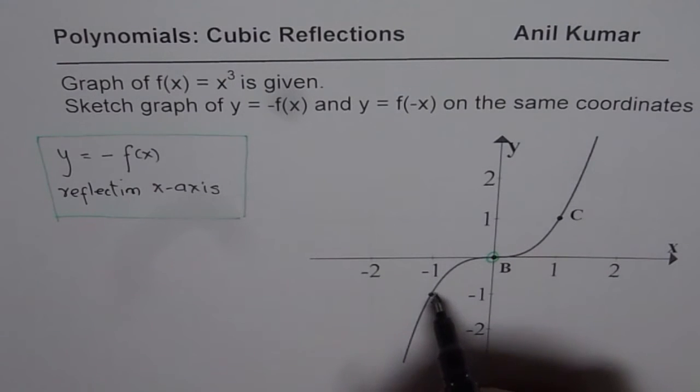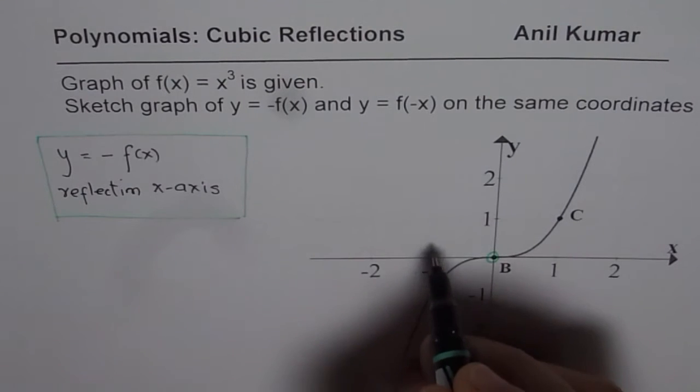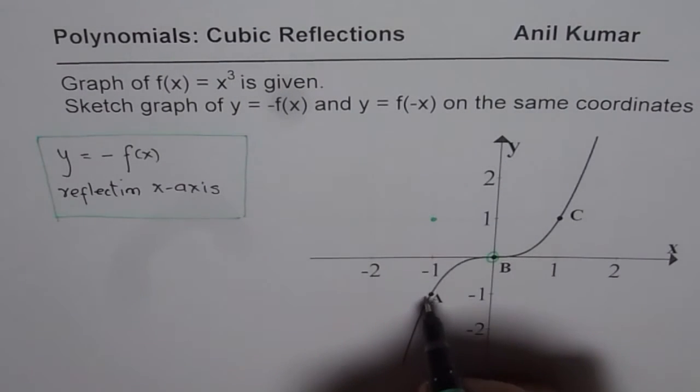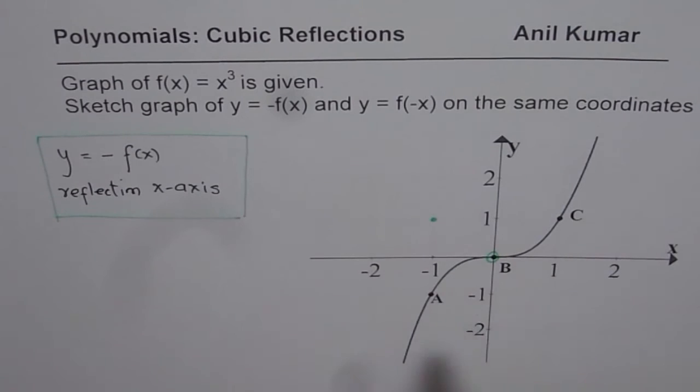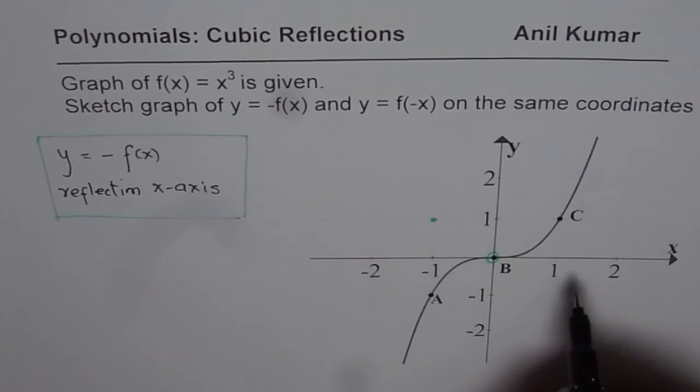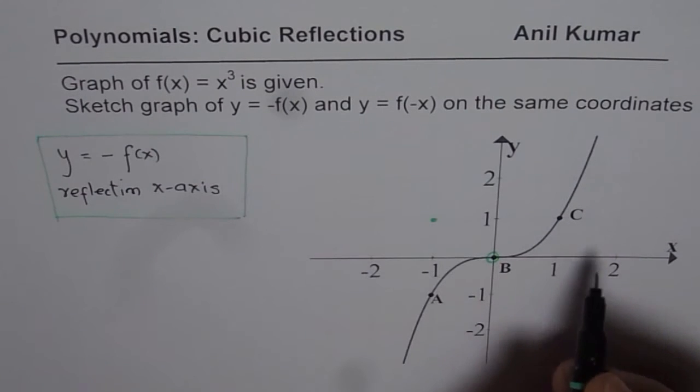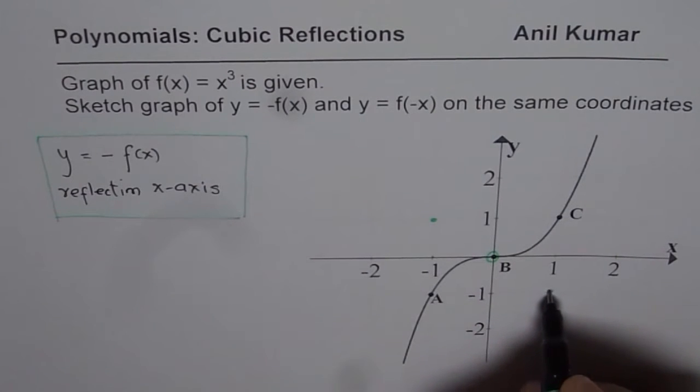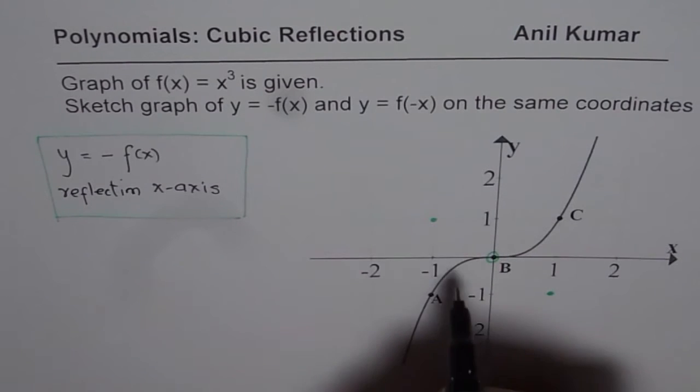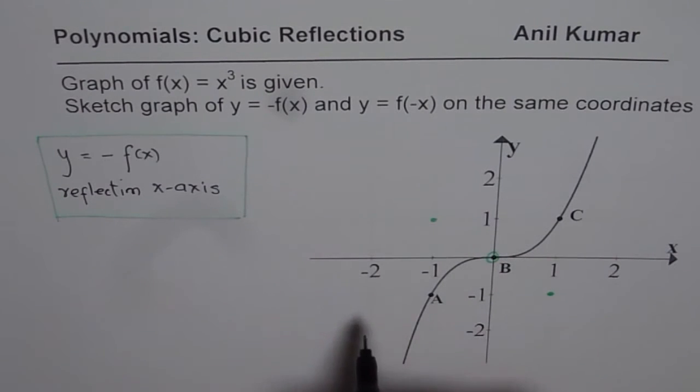Point A, which is having a y-value of minus 1, will become plus 1. So that is how it reflects. When it reflects, it will be the same distance away from the x-axis. And this point C will be reflected to 1, minus 1. So that is how the graph will look like.